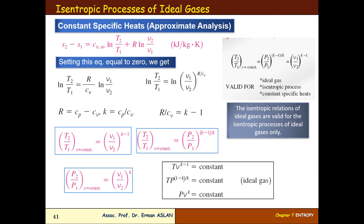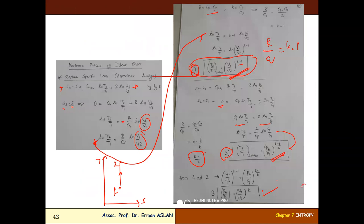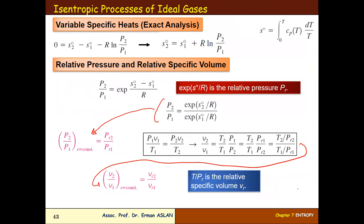For ideal gases, we summarize: T·v^(k−1) is constant; T·P^((1−k)/k) is also constant; and P·v^k is also constant. Now for the isentropic process of ideal gases, we make an exact analysis. S0 comes from Table A7 or Table A21 — that is, from the ideal gas tables.